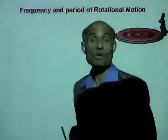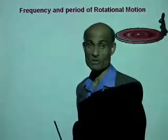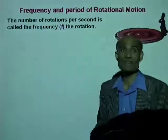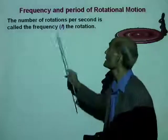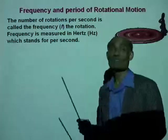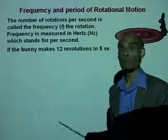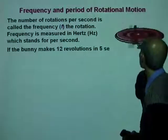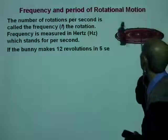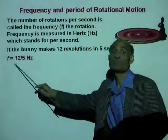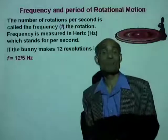Let's review the concept of frequency and period. The number of rotations per second of a rotating object is called frequency, and frequency is measured in hertz, which is per second. If the bunny makes 12 revolutions in 5 seconds, then the frequency is 12 divided by 5 hertz.